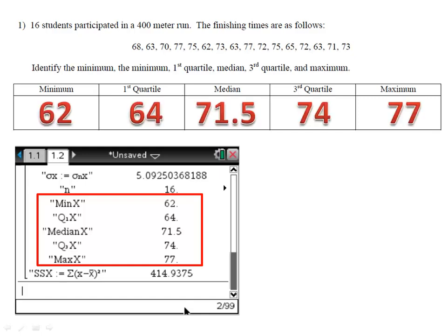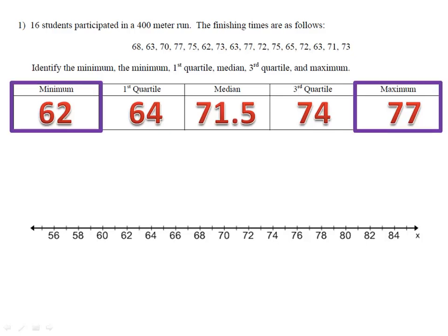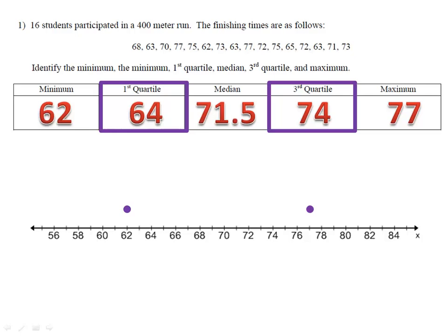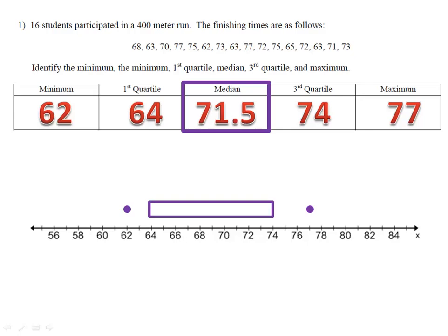We write these numbers on our paper and then go to our number line. We begin with the minimum and the maximum and draw dots above the number line at those points. Then we move inward — 64 and 74 are the first and third quartiles, which are the sides of our box. We begin the box at 64 and end it at 74. The median is 71.5, so we draw a dashed line through the middle of the box. Finally, we connect the outlying points — the minimum and maximum — with whiskers, and we now have our box and whisker plot.